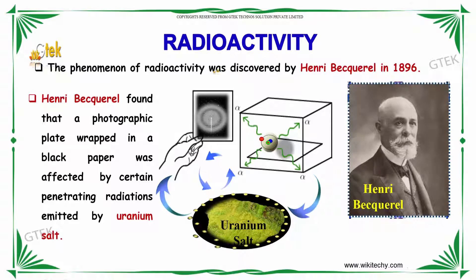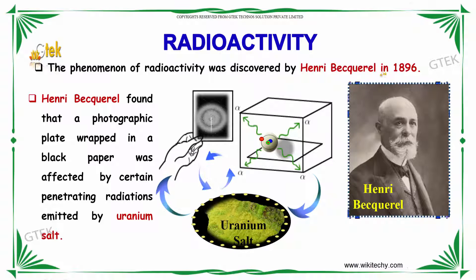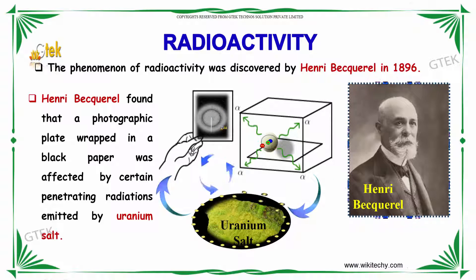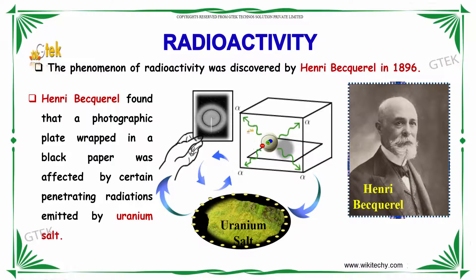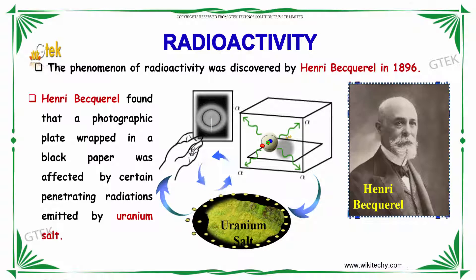The phenomenon of radioactivity was described by the great physicist and scientist Henry Becquerel in the year 1896. Becquerel found that a photographic plate wrapped in black paper was affected by certain penetrating radiations emitted by uranium salt. That's how he found there was something beyond — the photographic plate wrapped in black paper was affected by certain penetration by uranium salts.